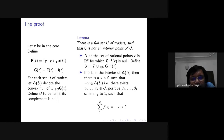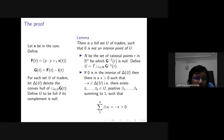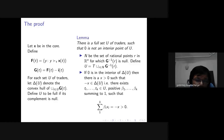For each set U of traders, let delta(U) denote the convex hull of the extra stuff needed for each agent. Define U to be full if its complement is null — so U has measure one. Our lemma is: if x is in the core, there is a full set of traders such that zero is not an interior point of delta(U). We are saying that a blocking coalition is impossible — you cannot find a set of traders where the net allocation is zero and yet everyone is made better off.